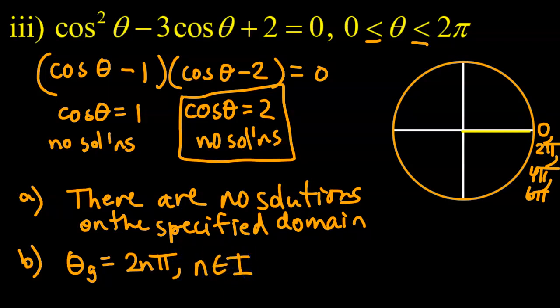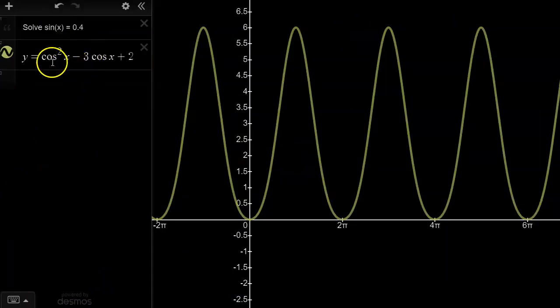Now, I just want to show you one last thing. I'm going to solve this graphically just to show you that it does have solutions, but not on this domain. Hang in tight. So here's what I've done. I've typed in the original left-hand side of the equation. Right? It was cos²θ - 3cosθ + 2 = 0. So here's y = cos²x - 3cosx + 2.